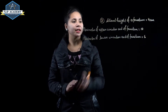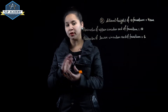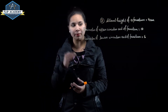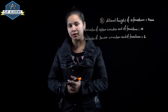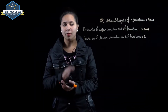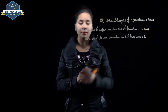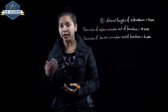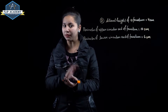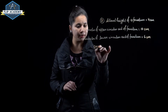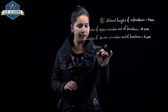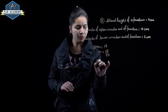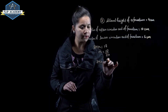In this question, slant height of frustum equals 4 centimeter. Perimeter of the upper circular end of frustum is equal to 18 centimeter, and perimeter of lower circular end of frustum is equal to 6 centimeter. Perimeter of a circular end equals circumference, so 2 pi r1 equals 18, giving r1 equal to 18 upon 2 pi. And 2 pi r2 equals 6 centimeter.